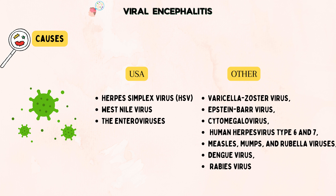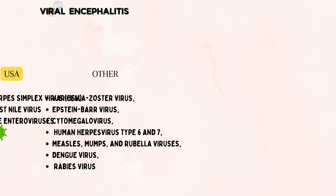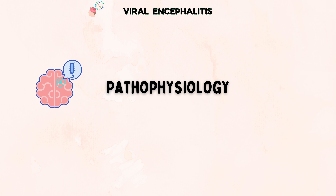So if there is a fever and you suspect neurological signs of encephalitis, it is important to rule out if there is any inflammation in the brain. Moving forward, let's discuss the pathophysiology of viral encephalitis.